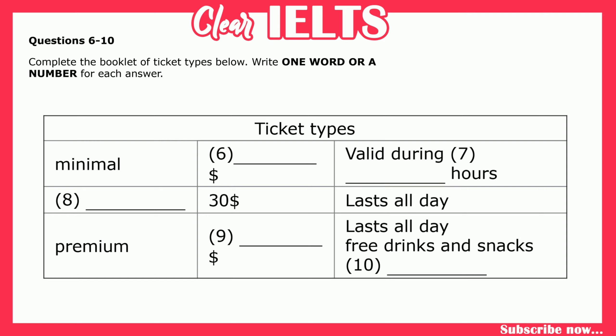What ticket types do you have? We have three ticket types. The first one is called minimal, and it is the cheapest tariff. It costs only $15, and you can use such a ticket for two hours.